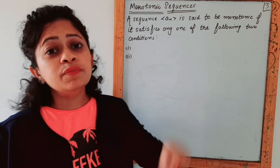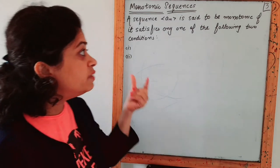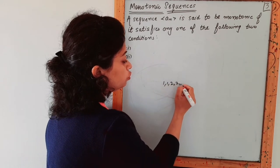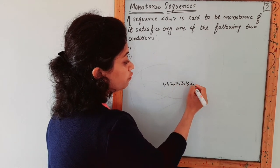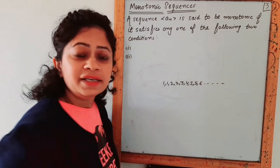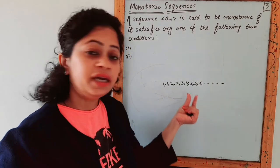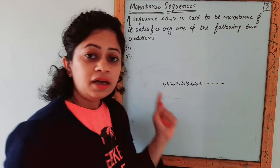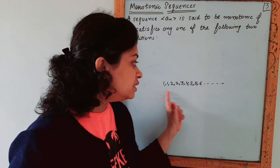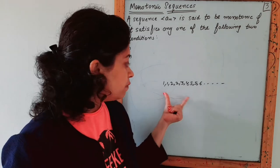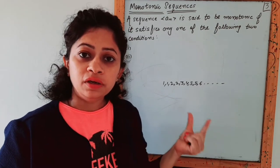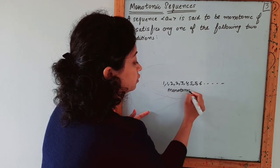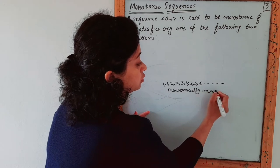In sequences, we use the word monotonic similarly. Suppose you have a sequence: 1, 1, 2, 2, 3, 4, 5, 5, 6, and so on. This type of sequence is never decreasing.